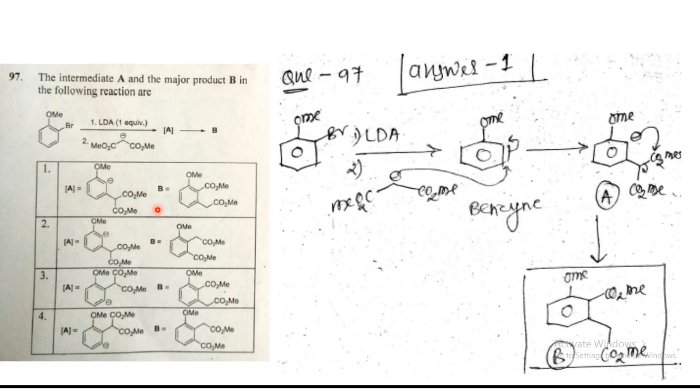So ortho to the methoxy, negative charge is stable. So out of these two, one is the answer. Now you have to see in the next step what they have given and what should be the exact product. You can see this negative charge will react with this ester, so one of the ester will migrate from this carbon to this carbon. So B1 should be this.